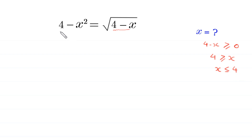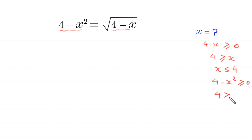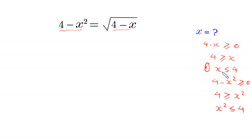And this expression 4 minus x squared must also be greater than or equal to 0. If we move this negative x squared to the right hand side, then 4 must be greater than or equal to x squared. It means x squared must be less than or equal to 4. So we have two conditions as the domain of this equation, which we use to check the solutions.